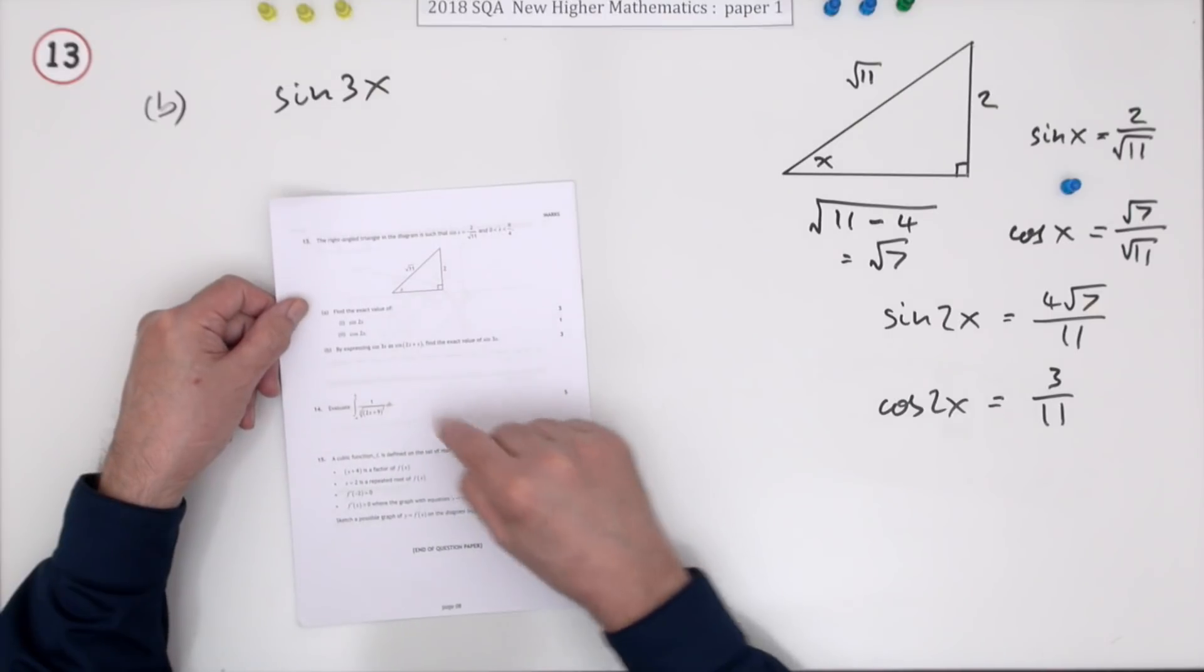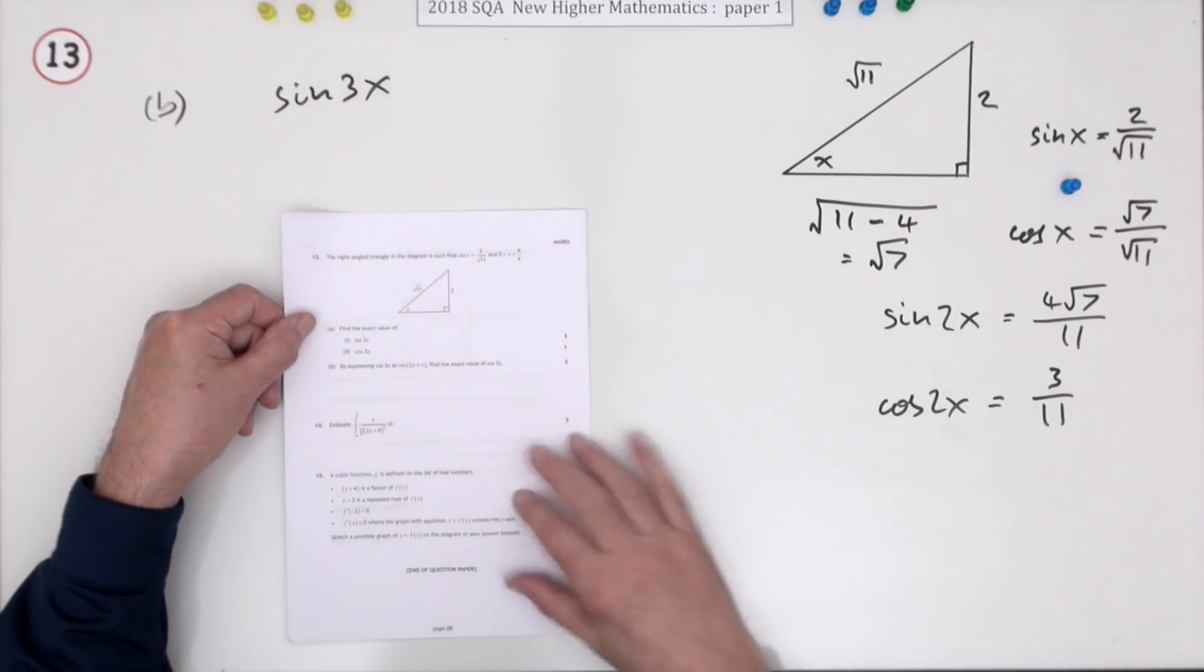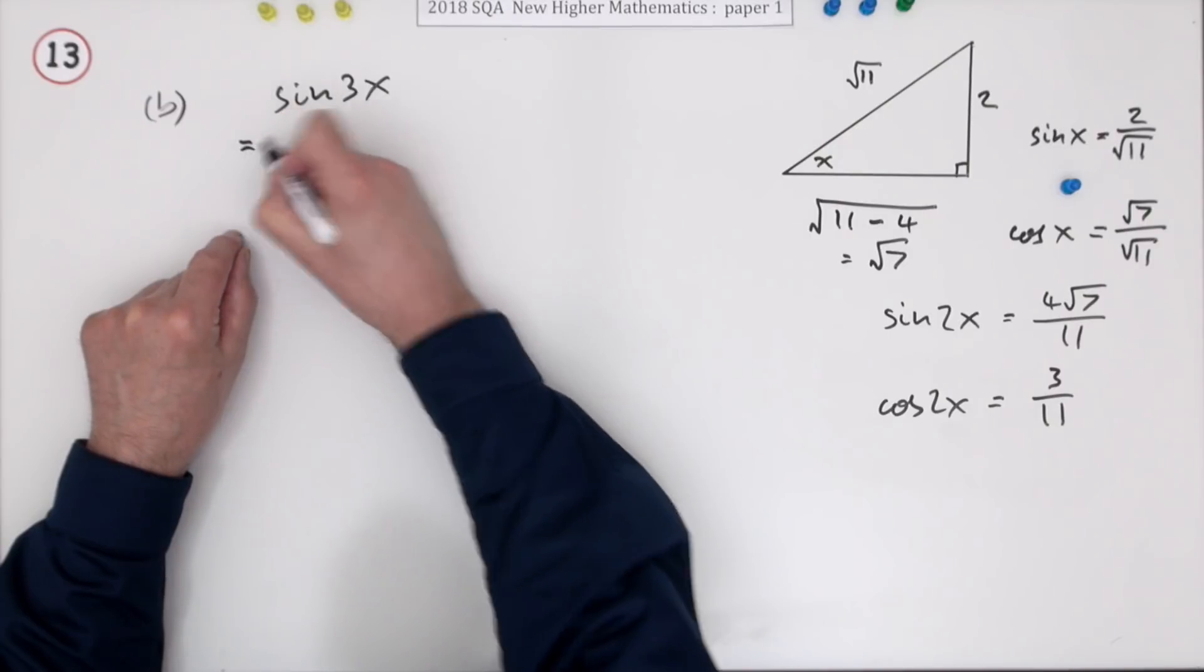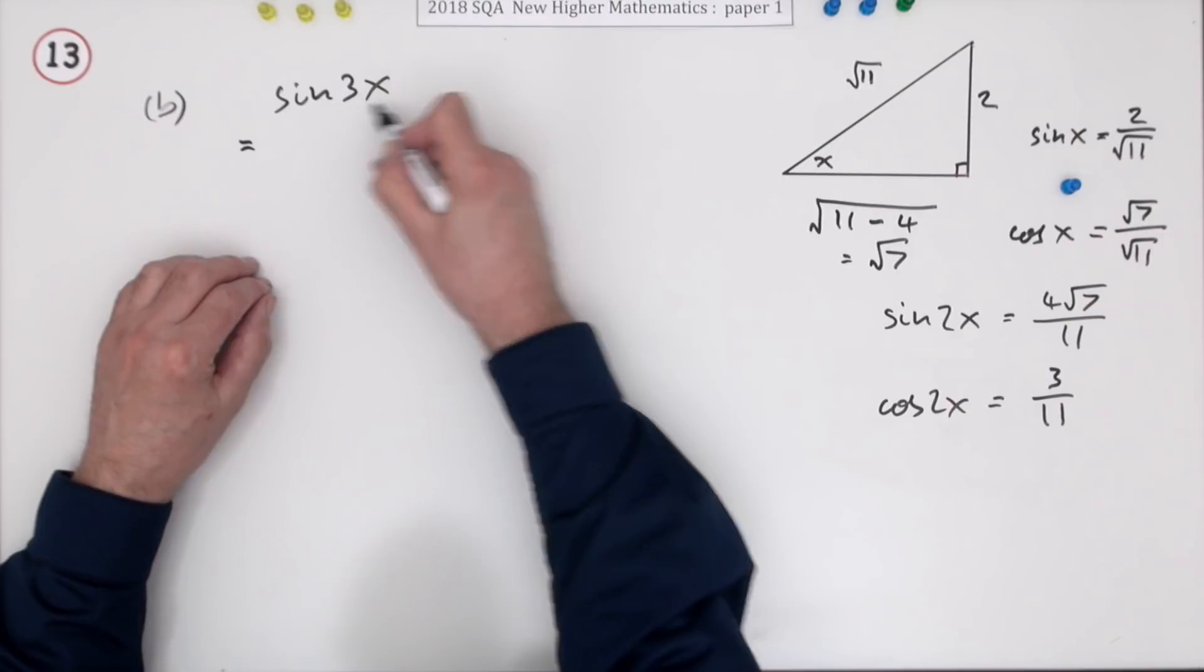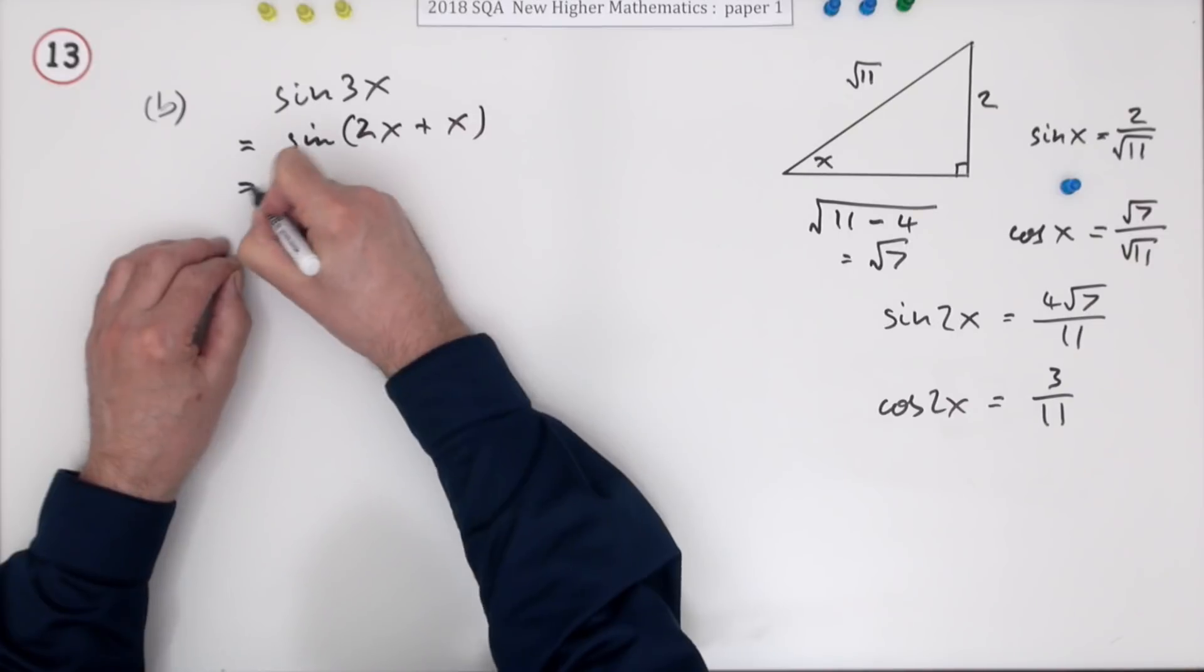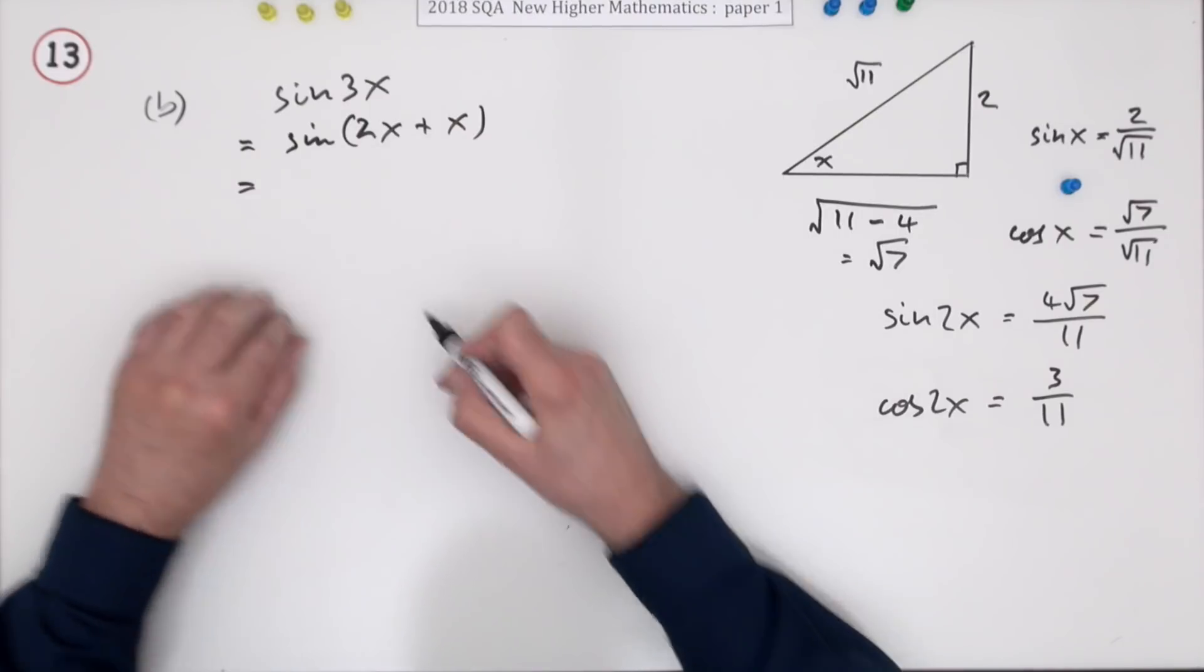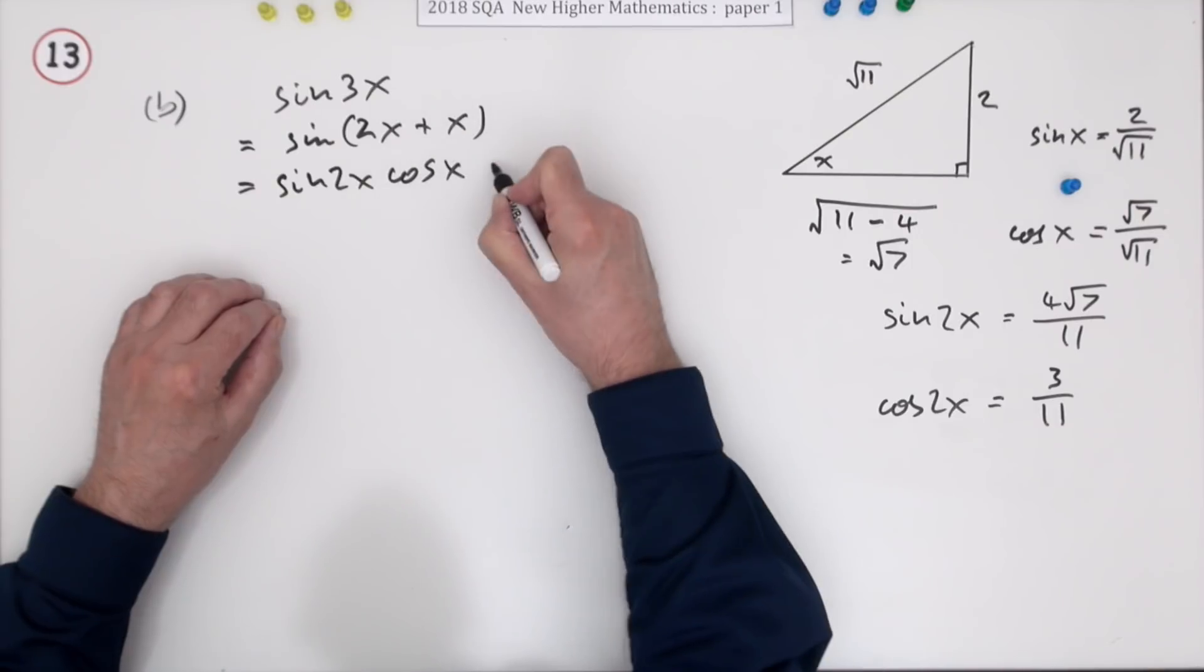Part B: by expressing sine 3x as sine 2x plus x, find the exact value of sine 3x. Well it didn't give you a clue, it didn't need to. It should really have been up to you to realize how can I get a 3x? And you think, well I can make it a 2x plus an x. And then you look up the front because there's a formula that expands the sine of an angle plus an angle.